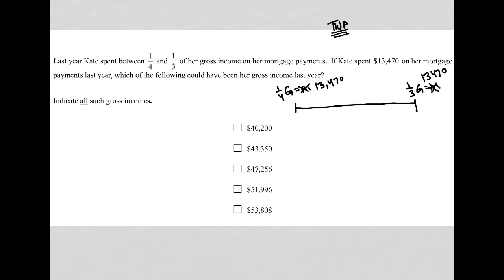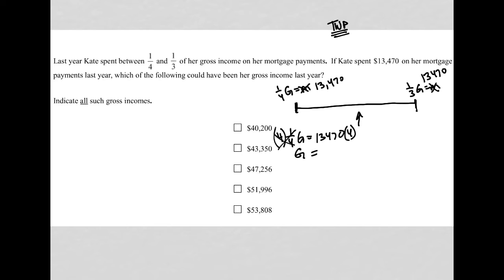Which of the following could have been her gross income? Our gross income could be at one of these endpoints, or somewhere in the middle. To solve one-fourth G equals $13,470, I isolate G by multiplying both sides by four. Then I use my calculator: $13,470 times four gives a potential gross income of $53,880.